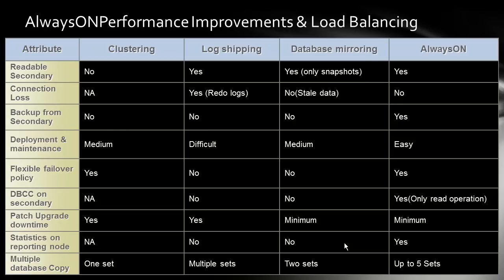Another important criterion is backup from secondary. Log shipping does not allow it, and database mirroring does not allow it either. This is a new feature introduced in Always On, which allows you to take backups from any of the secondaries. You can totally offload work that was previously done on the primary DB server in SQL 2008 — transaction log backups, full backups, and differential backups — and do it all on a secondary mirror.